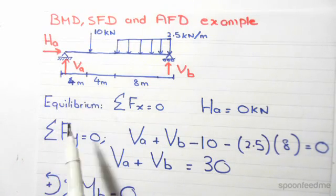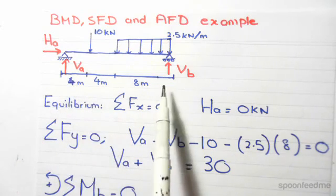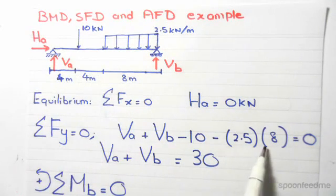Next, we have to do the sum of forces in the vertical direction. So we've got VA plus VB minus 10, because it's the point load, then minus 2.5 times 8.